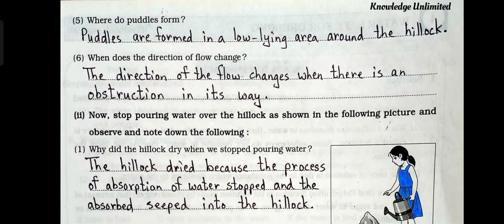Number five: where do puddles form? Answer: puddles are formed in a low-lying area around the hillock. Question number six: when does the direction of flow change? Answer: the direction of flow changes when there is an obstruction in its way.